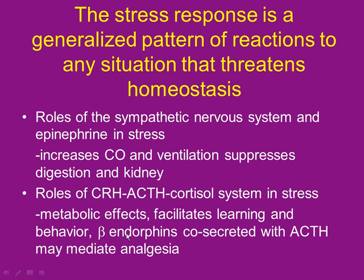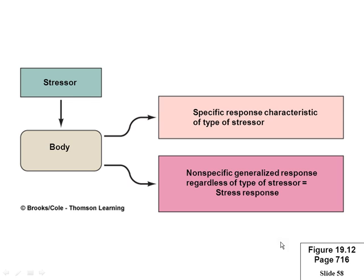Beta-endorphins: with the ACTH pathway, beta-endorphins are endogenous morphine secreted along with ACTH. So stress turns up your endogenous morphine to help deal with pain better. A stressor causes your body to release epinephrine, norepinephrine, and cortisol. One nonspecific response is depression of the immune system — so it's not good to be stressed all the time. When stressed a lot, you tend to get sick.